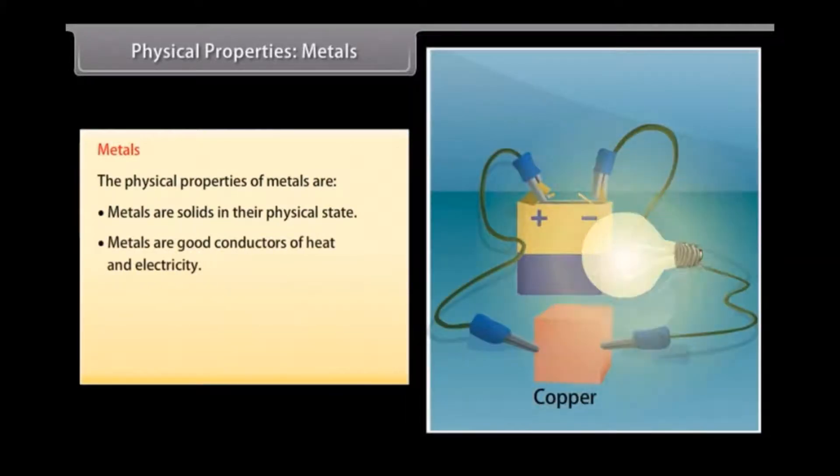Good conductors of heat and electricity. Metals are good conductors of electricity as they have free electrons. For example, silver and copper are the best conductors of heat and electricity, whereas lead is the poorest conductor of heat.